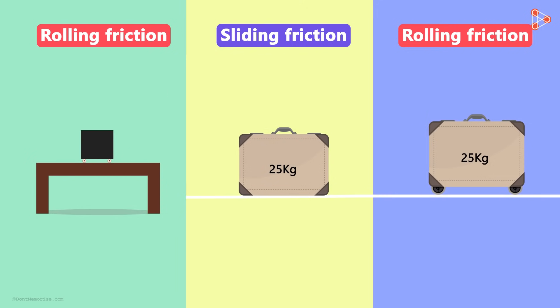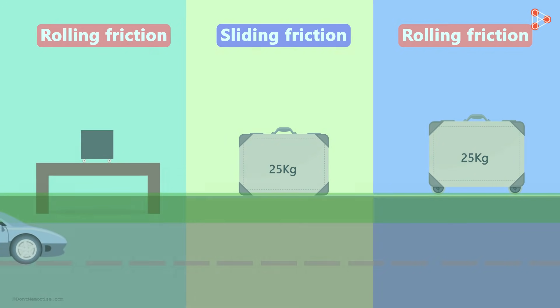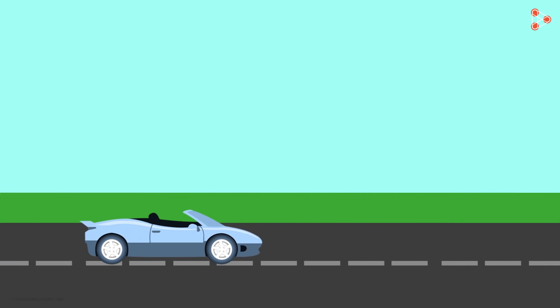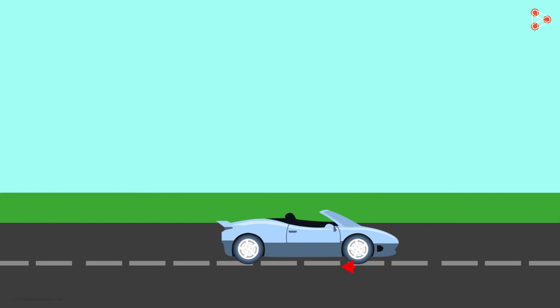Can you think of more examples where the concept of rolling friction is used to reduce the friction? Yes, tires of your car. When the car is in motion, the ground applies a force of resistance which is nothing but rolling friction on the tires.